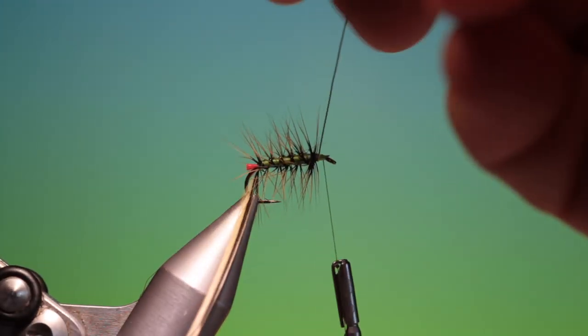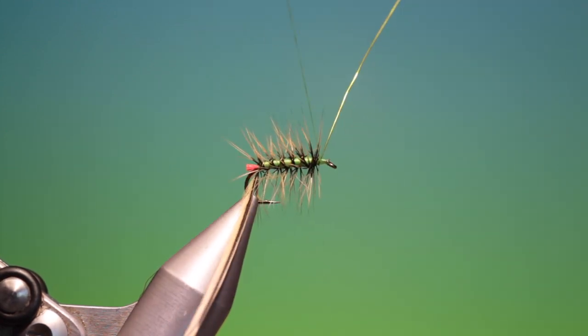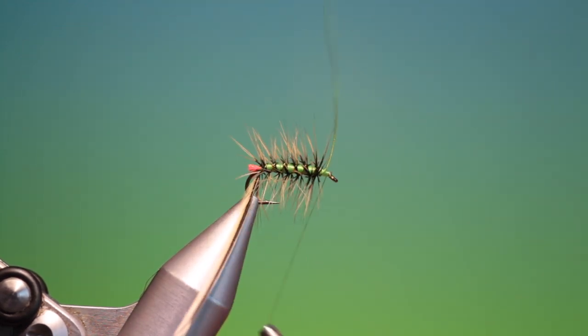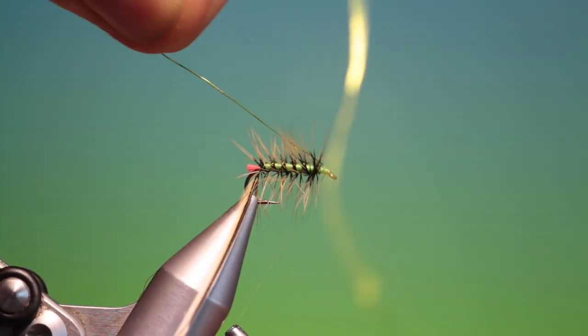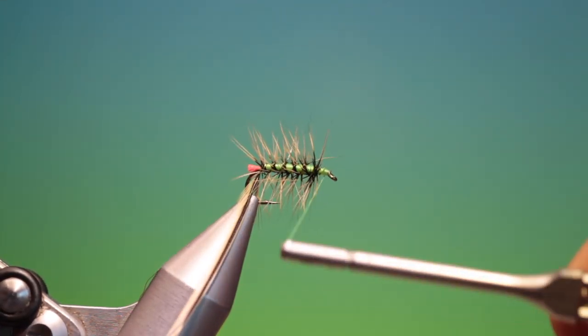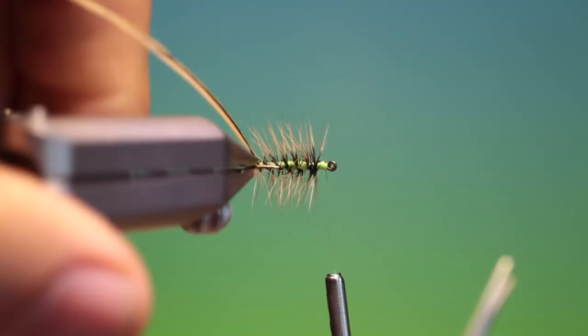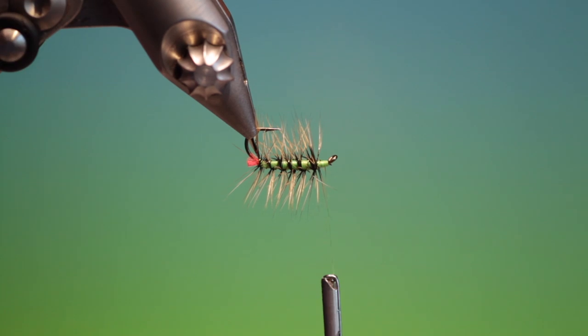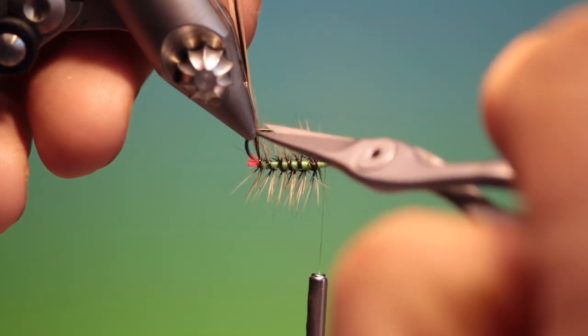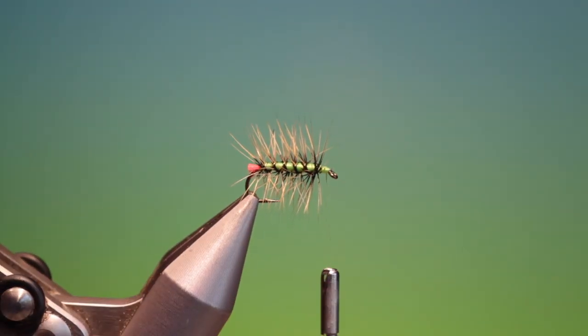There we are. And we'll end up there. Then we can just lock that off. Keep the pressure on your tying thread on your bobbin. And we'll just break that off with friction. Then we can come up here. I'll use my serrated scissors so I get a good grip on that hackle. There we are. That's the body done.